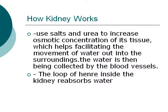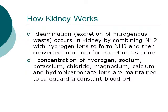The loop of Henle inside the kidney reabsorbs water. Deamination is the process of excretion of nitrogenous wastes. It occurs in the kidney by combining NH2 with hydrogen ions to form NH3, which is then converted into urea for excretion as urine.